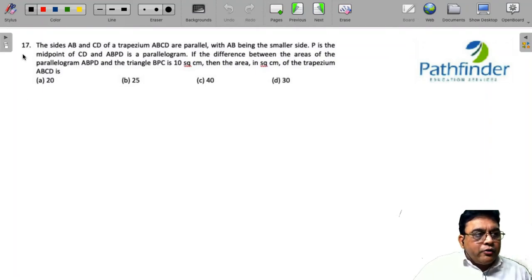CAT 2021 Slot 2, question number 17. The sides AB and CD of a trapezium ABCD are parallel, with AB being the smaller side. Let's draw a diagram for that. So we have a trapezium.